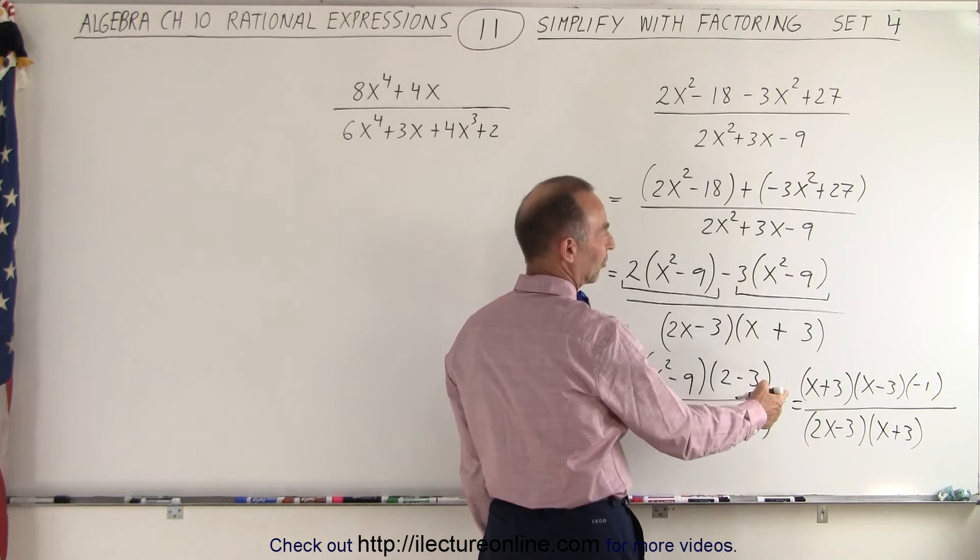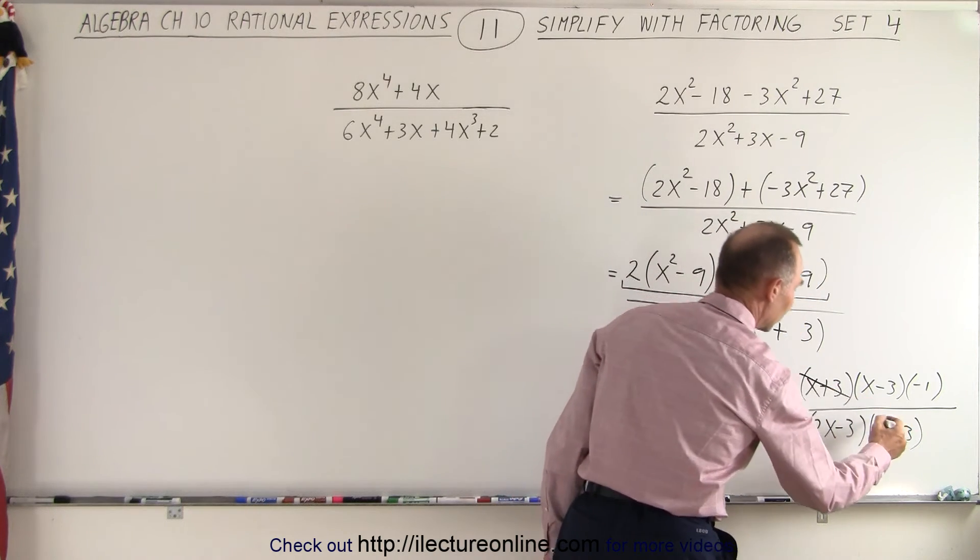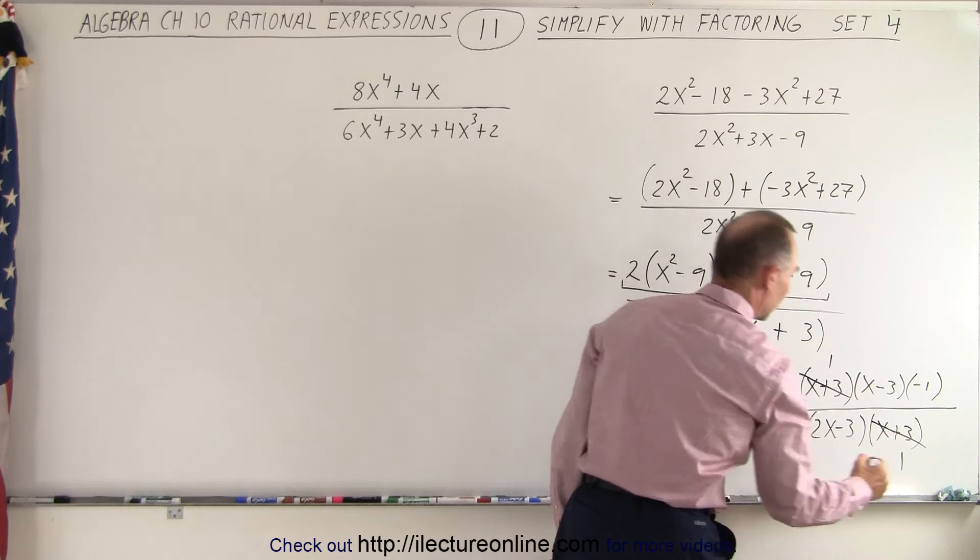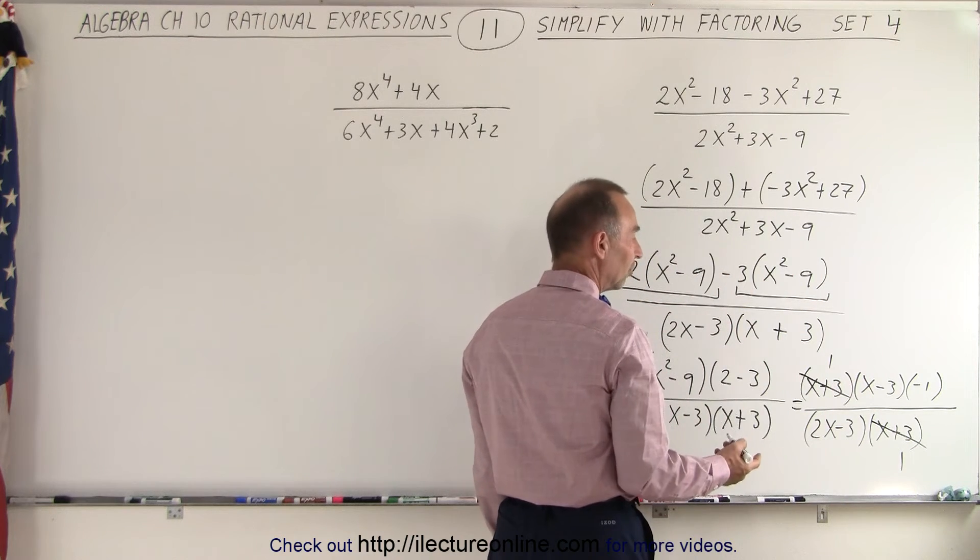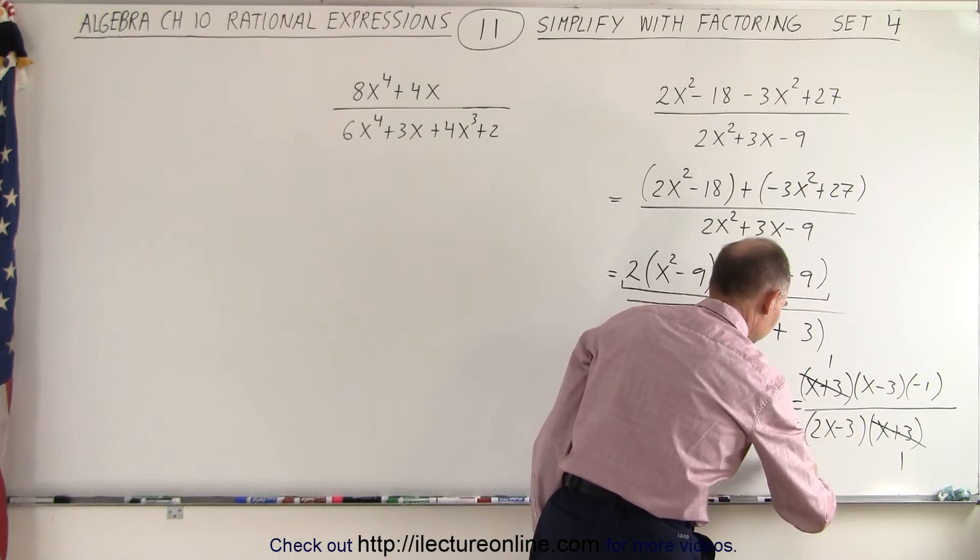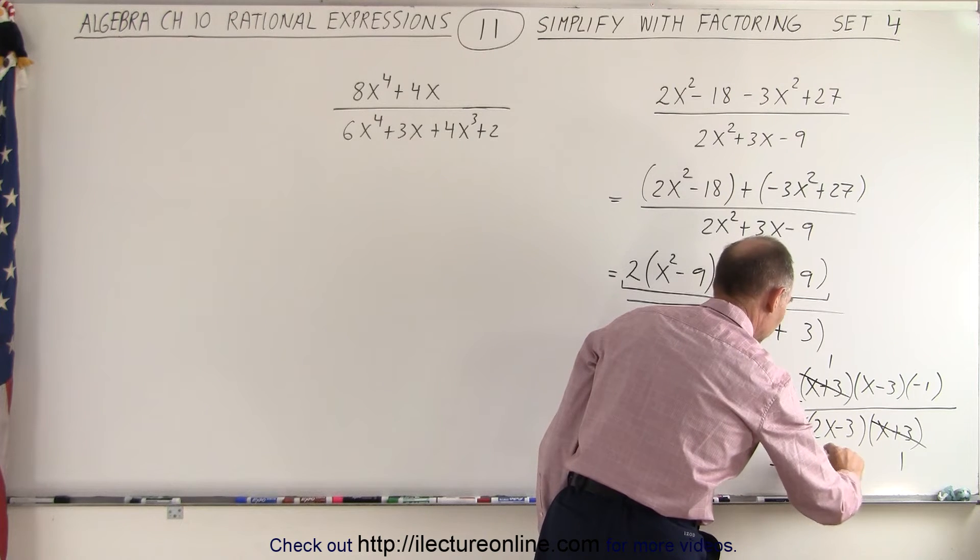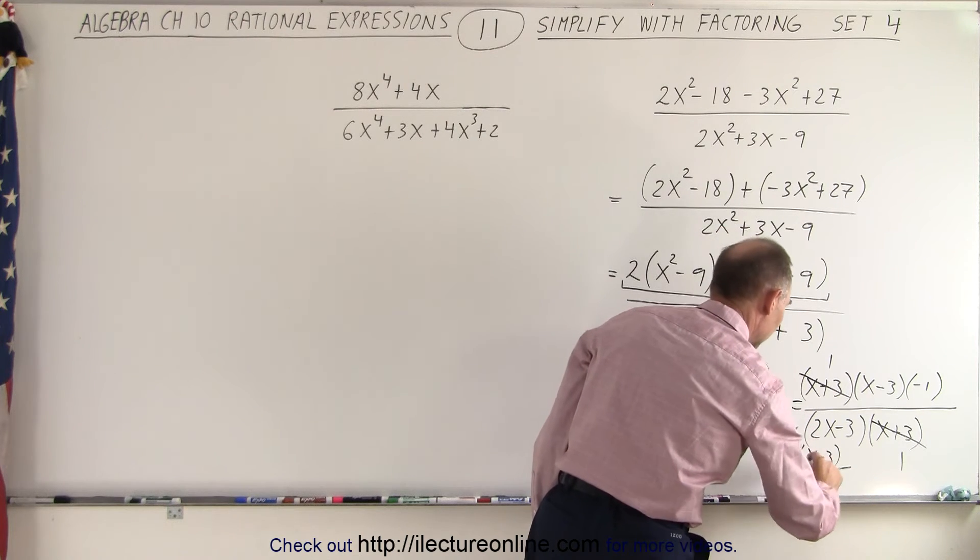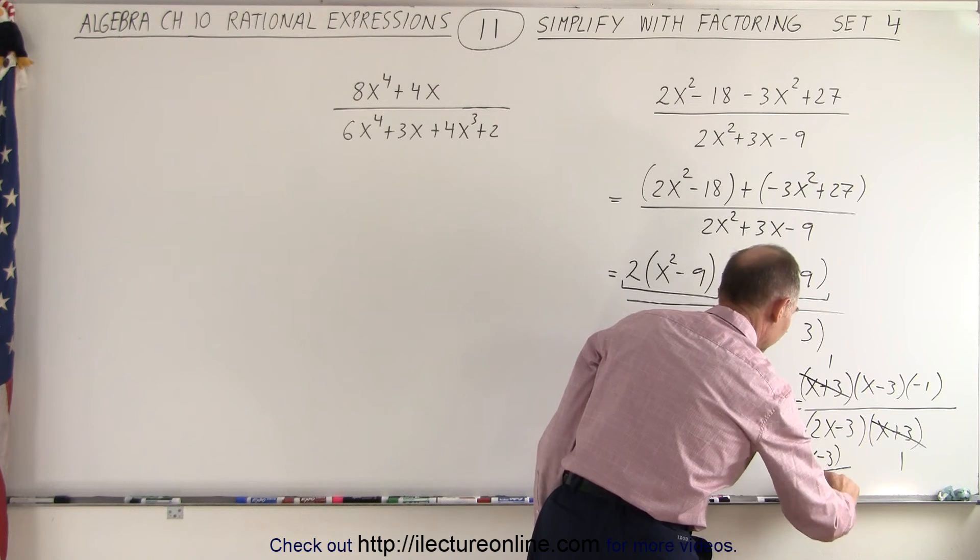And then notice that the x plus 3s are common in the numerator and denominator, so that cancels out. So we're left with, we can put the negative in front, so that would be negative 1 times an x minus 3 divided by a 2x minus 3.